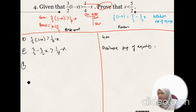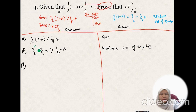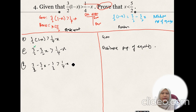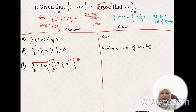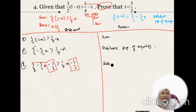For step 3, I want to eliminate 3 over 2 on the left-hand side, so I subtract 3 over 2 from both sides. We write: (3 over 2 minus (3 over 2)X) minus 3 over 2 is greater than (1 over 4 minus X) minus 3 over 2. We have minus 3 over 2 on the left-hand side and minus 3 over 2 on the right-hand side as well. The reason is the subtraction property of inequality.